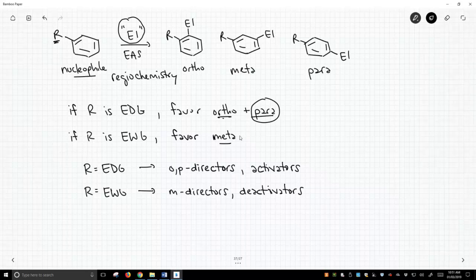So that is, in a nutshell, how we talk about the regiochemistry of electrophilic aromatic substitution. But, of course, to put this into practice, we need to be able to identify what are the electron-donating groups and what are the electron-withdrawing groups.